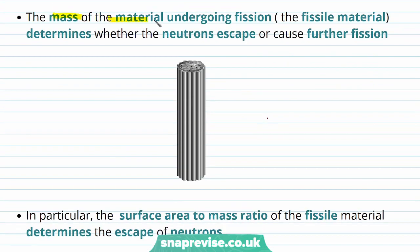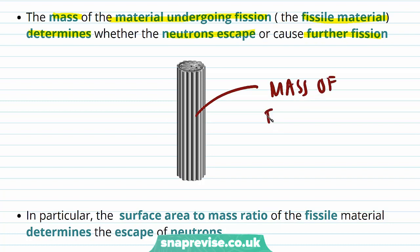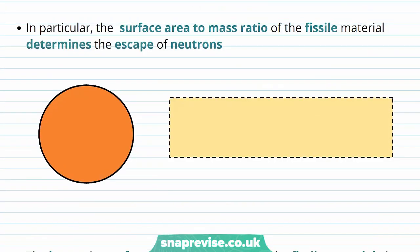The mass of the fissile material undergoing fission will determine whether neutrons escape or cause further fission. The mass of the fissile material has an important role to play. In particular, the surface area to mass ratio of the fissile material determines the escape of neutrons.